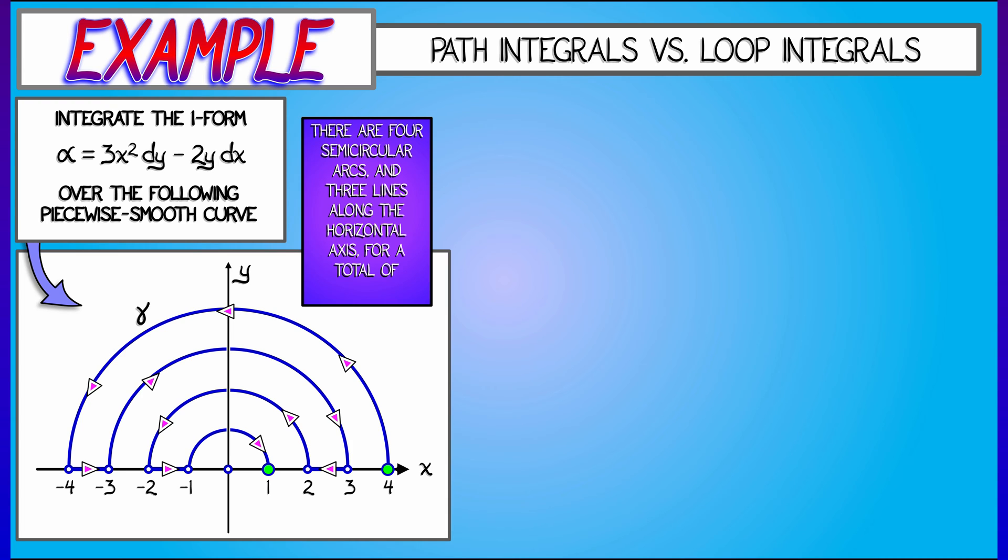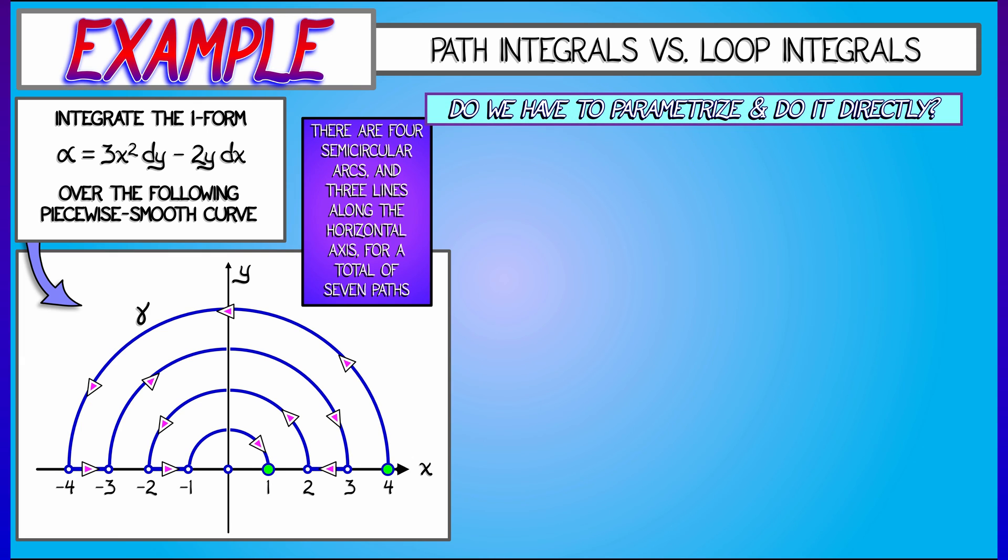Four semicircular arcs, three straight line segments across the horizontal axis. That's a total of seven paths to compute the integral of alpha. It would seem as though I would have to parametrize these paths and then do the seven different integrals. That's not going to be so bad, but that's really not ideal.